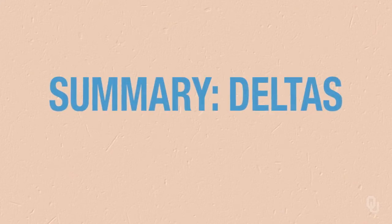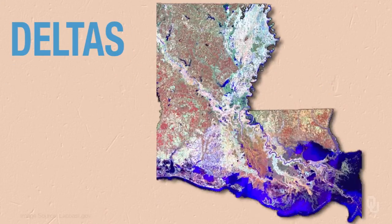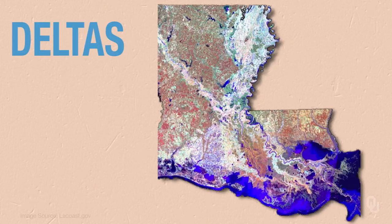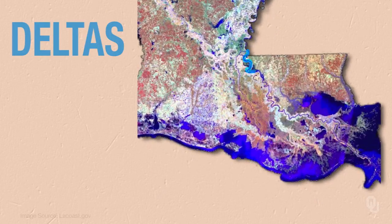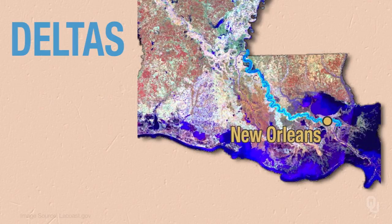This is the summary for deltas. Deltas are the end of the line. In this picture of the Mississippi River and Delta in Louisiana, you can see the Mississippi River coming down past New Orleans, just south of Lake Pontchartrain, and out to the current Birdfoot Delta down here.